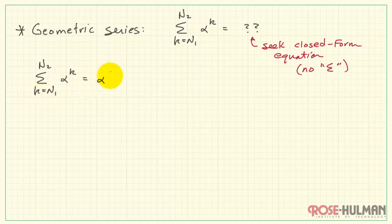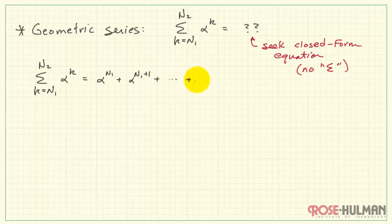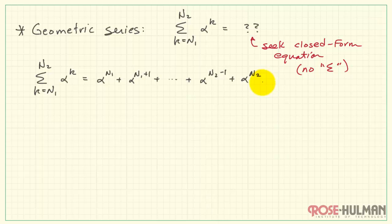Let me begin by expanding the series. We would have alpha raised to the first value of k, which is n1. The next term is n1 plus 1, and we keep going until we get close to the upper limit of n2. The value just before that would be alpha raised to n2 minus 1, and then the final value is alpha raised to n2. Let me call this sum capital S.